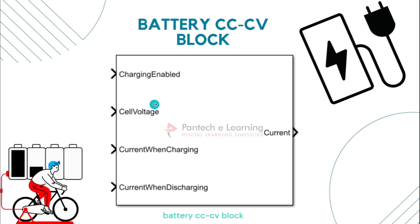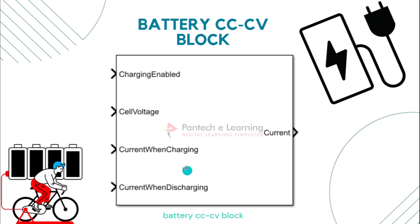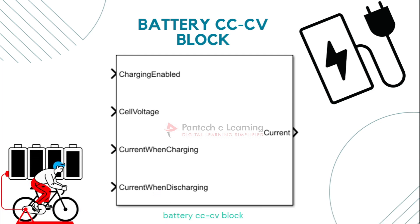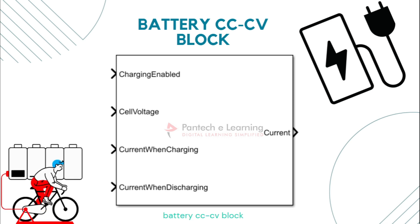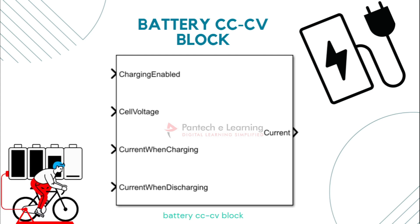Next is the cell voltage parameter. This parameter represents the current voltage of the battery cell, typically specified in volts, and provides information about the electrical potential difference across the battery terminals. Next, the current when charging parameter defines the constant current applied to the battery during the charging process, typically specified in amperes, determining the rate at which the battery charges. Next, the current when discharging parameter represents the constant current applied to the battery during the discharging process, also specified in amperes, determining the rate at which the battery discharges.